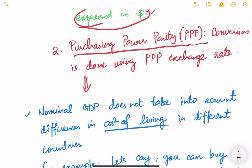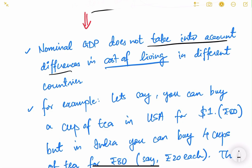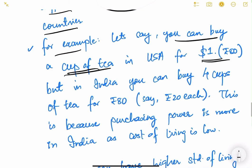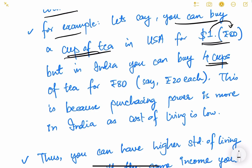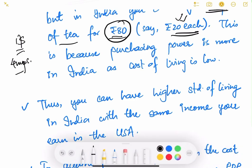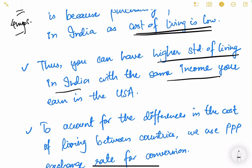The second method uses the PPP exchange rate. Nominal GDP does not account for differences in the cost of living between countries. For example, a cup of tea costs one dollar in the USA (equivalent to 80 rupees at market rate), but in India the same cup of tea costs only 20 rupees — so in 80 rupees you can buy four cups of tea in India. This is because purchasing power is higher in India due to its lower cost of living.